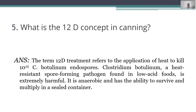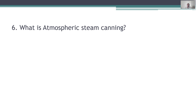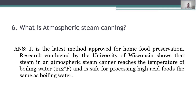Sixth question: what is atmospheric steam canning? It is the latest method approved for home food preservation. Research conducted by the University of Wisconsin shows that steam in an atmospheric steam canner reaches the temperature of boiling water — 212°F — and is safe for processing high acid foods, the same as boiling water.